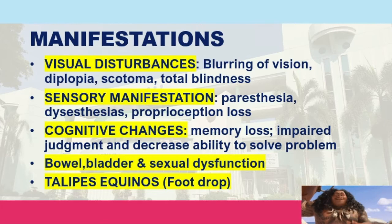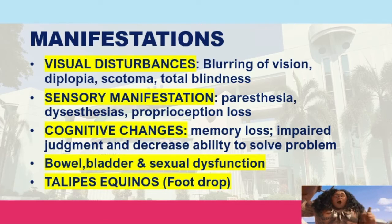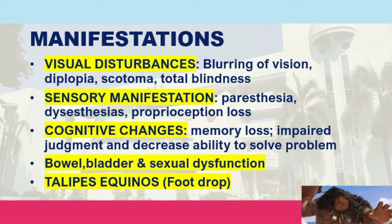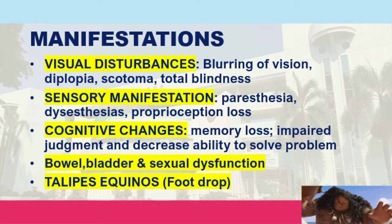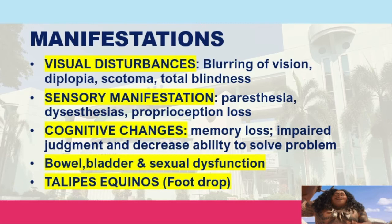Various assessment findings trigger suspicion of multiple sclerosis. Visual disturbances include blurring of vision, diplopia, scotoma, and total blindness. Sensory manifestations include paresthesia and dysesthesia — an abnormal sensation typically described as painful, itchy, burning, or restrictive.